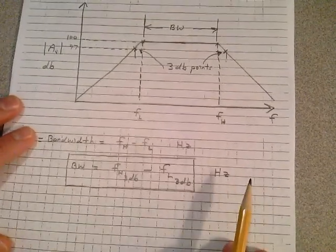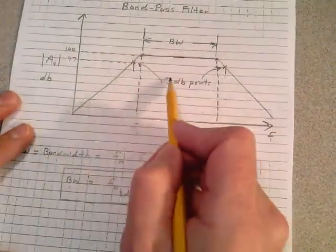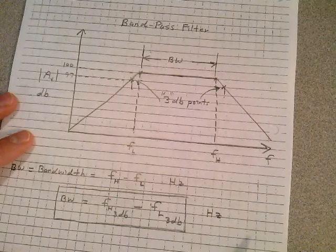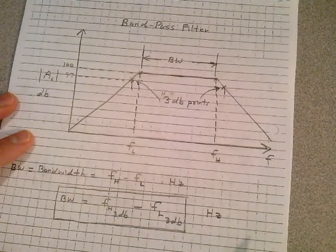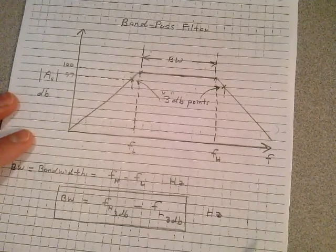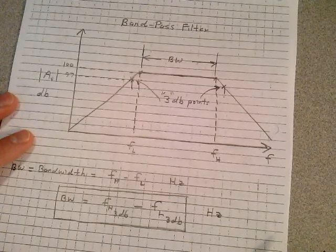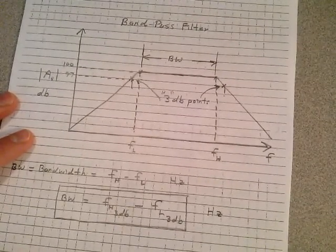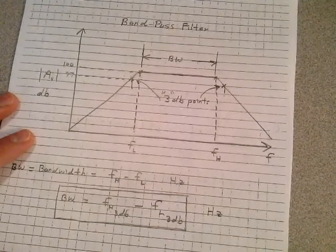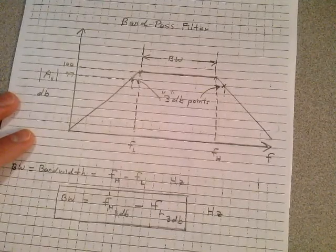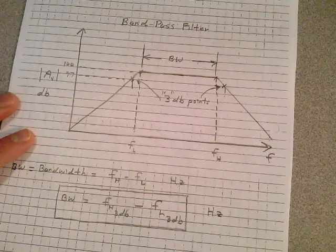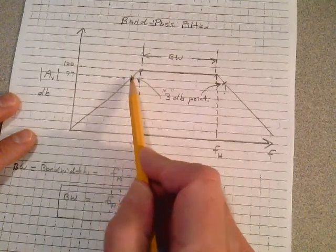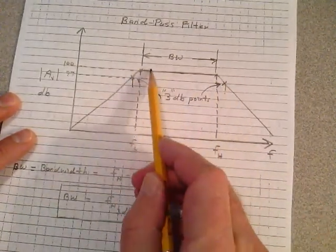Why did they pick 3 dB? It turns out the human ear can't detect changes in volume less than 3 dB on average. If a sound changes by 2.5, 2.6, 2.7, 2.8, or 2.9 dB, most human beings can't hear it. But humans can hear a change in a sound's intensity if it changes by 3 dB. So they didn't arbitrarily choose 3 dB — that's why we use 3 dB points down from the maximum.